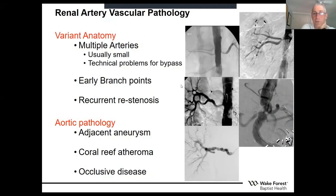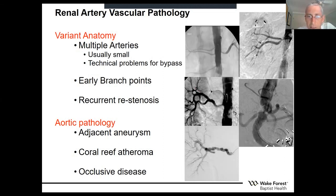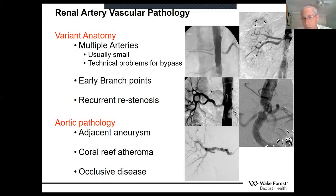This slide shows some examples of variant anatomies: multiple arteries in the top left photo, an early branch point in the top right, recurrent restenosis in the middle left panel, aortic pathology and coral reef atheromas in the bottom right panel, and in the bottom left a typical string-of-beads appearance for the medial fibroplasia variant of fibromuscular dysplasia.